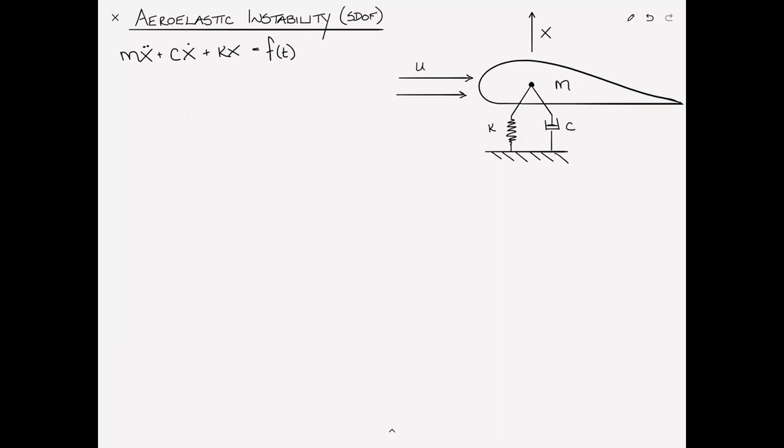At this stage of the game, you should be pretty comfortable with the equation of motion for a mass-spring-damper system. Mx double dot plus Cx dot plus Kx is equal to some external load f(t). Call this equation one. But the real question here is what is this external load?